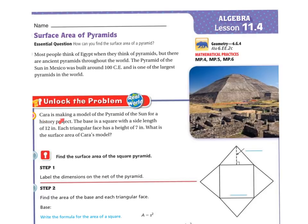Kara is making a model of the Pyramid of the Sun for a history project. The base is a square with a side length of 12. Each triangular face has a height of 7. What is the surface area of Kara's model?